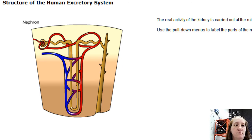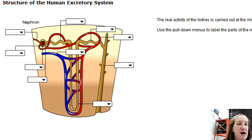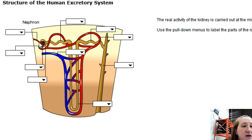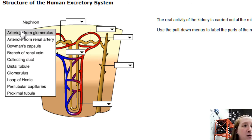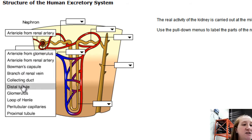The real activity of the kidney is carried out at the microscopic level in thousands of units called nephrons. Blood comes in and interacts with the nephron. It comes into a ball of capillaries called the glomerulus, and the cup of nephron tissue surrounding the glomerulus is called the Bowman's capsule. One kidney has about one million nephrons.